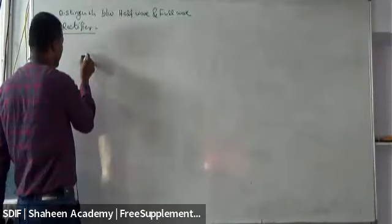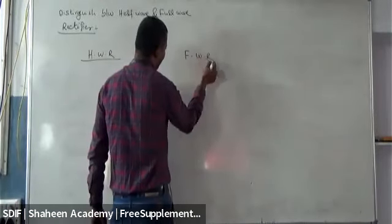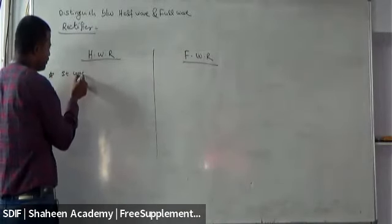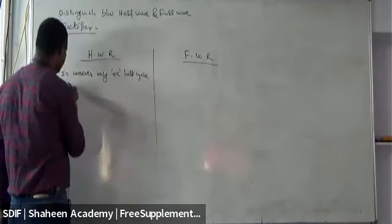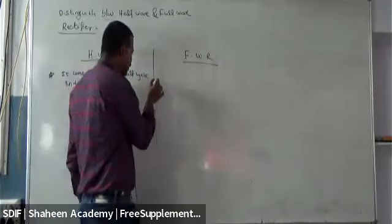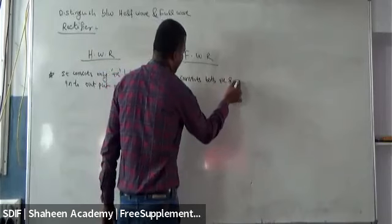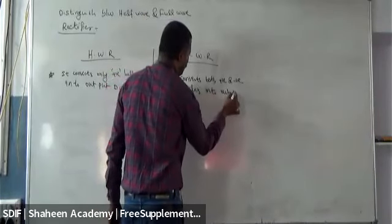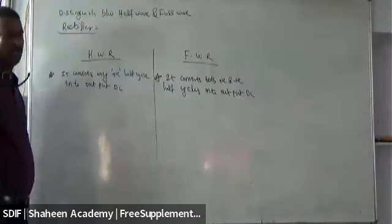First difference: half wave rectifier — it converts only the positive half cycle into DC output. Full wave rectifier — it converts both positive and negative half cycles into DC output.